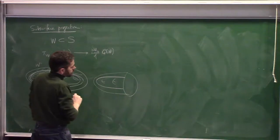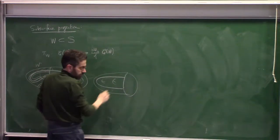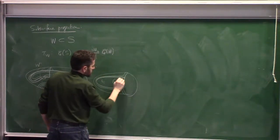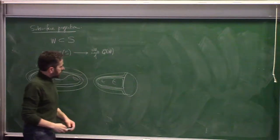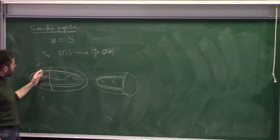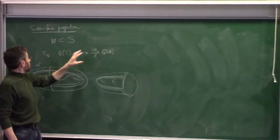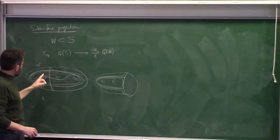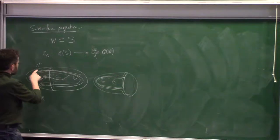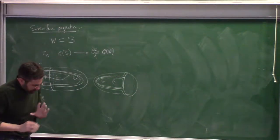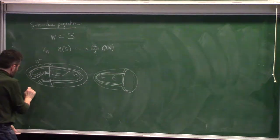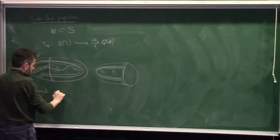You take an arc in W, take the arc union the boundary, thicken it, and you get a regular neighborhood with two boundary curves. Those two curves are the image. You do this for each of the finitely many classes of arcs and get a finite collection of curves in W - that's the image of the curve in W. It could be empty if the curve is disjoint from W, which is an important case.